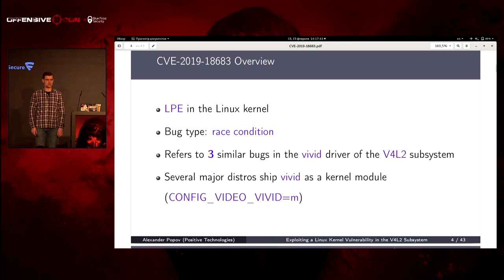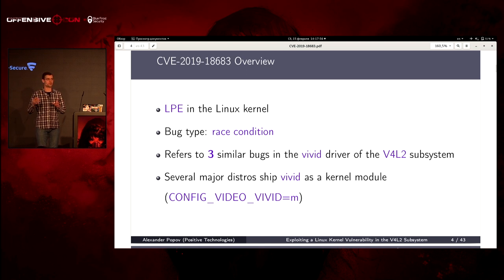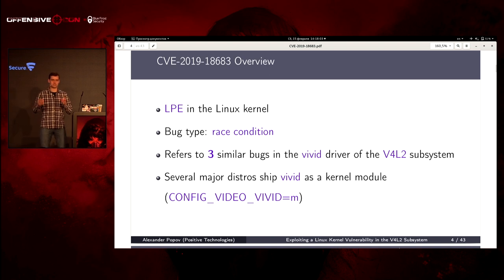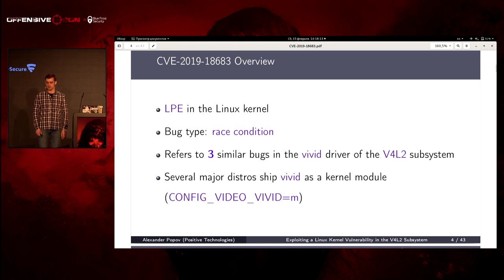This vulnerability is a local privilege escalation in the Linux kernel. The type of the bug is a race condition — the situation in software when the result of computation depends on the order of computations, for example in simultaneous threads. This vulnerability, CVE-2019-18683, refers to three similar bugs in the vivid driver of the Video4Linux subsystem.